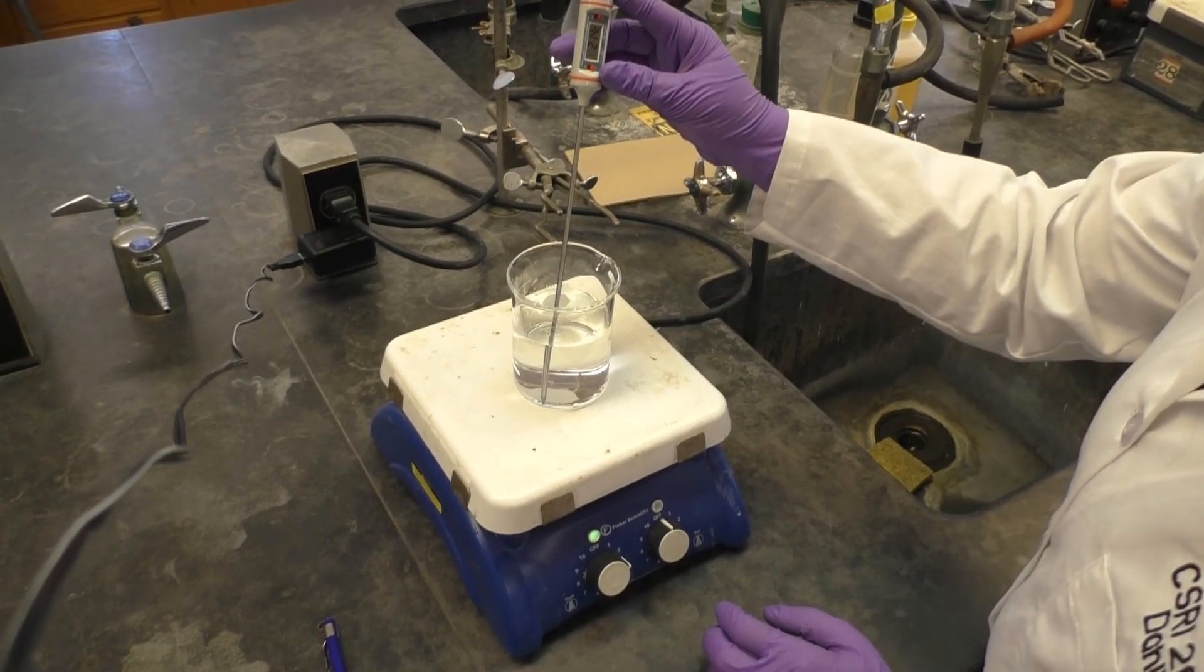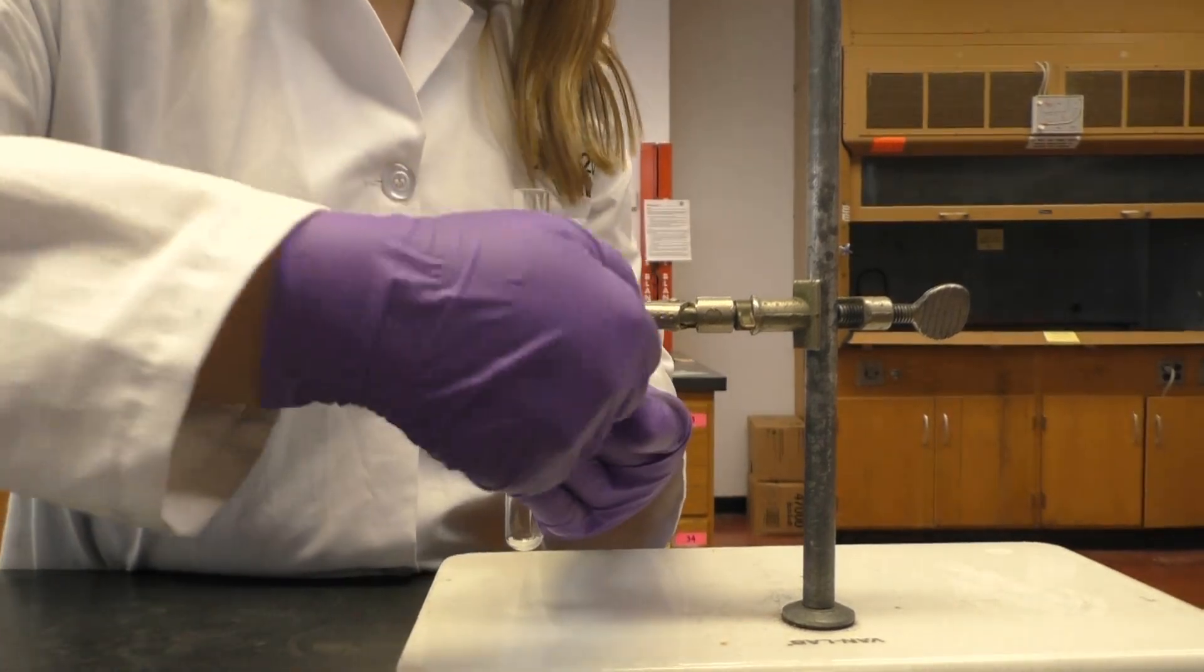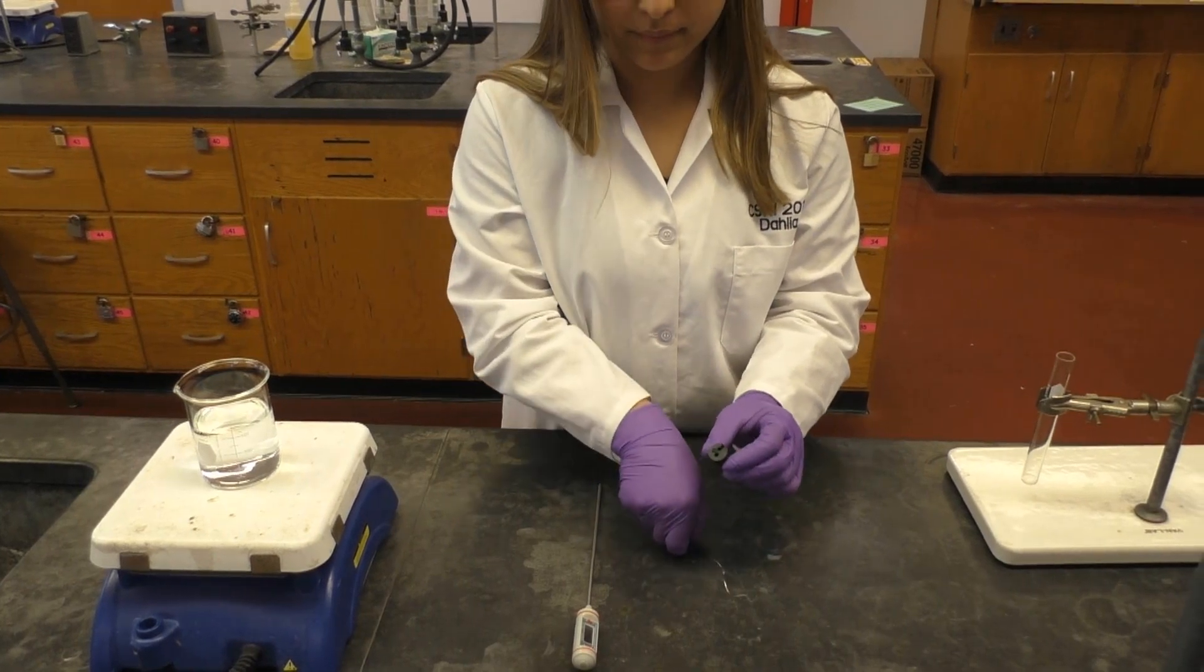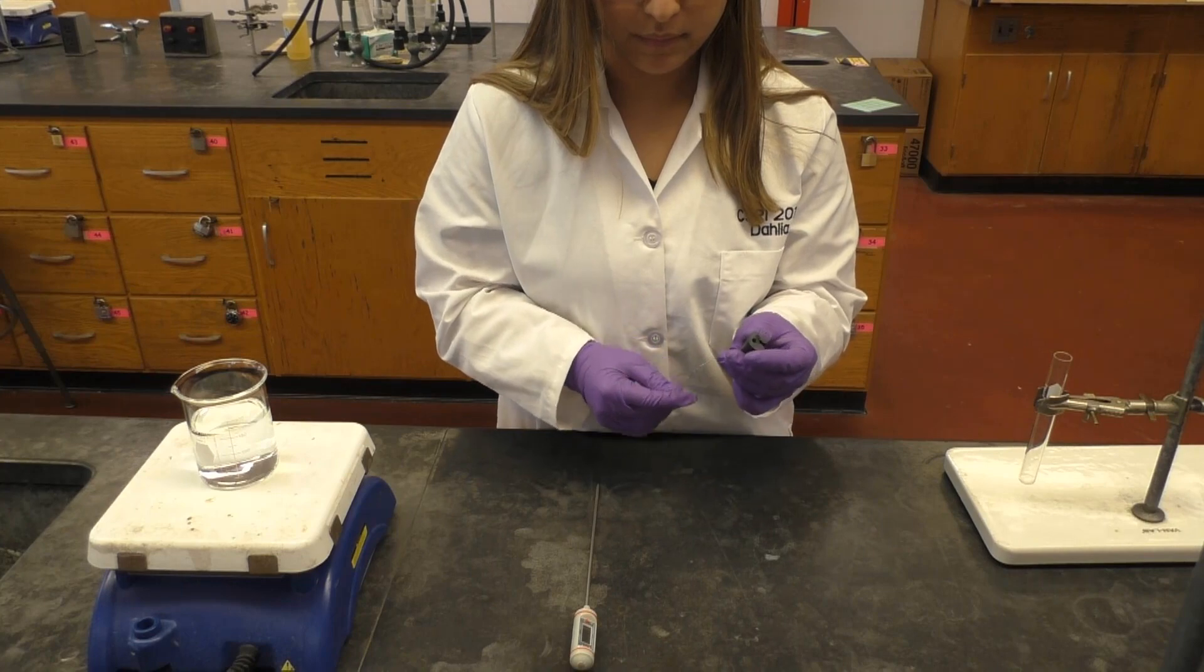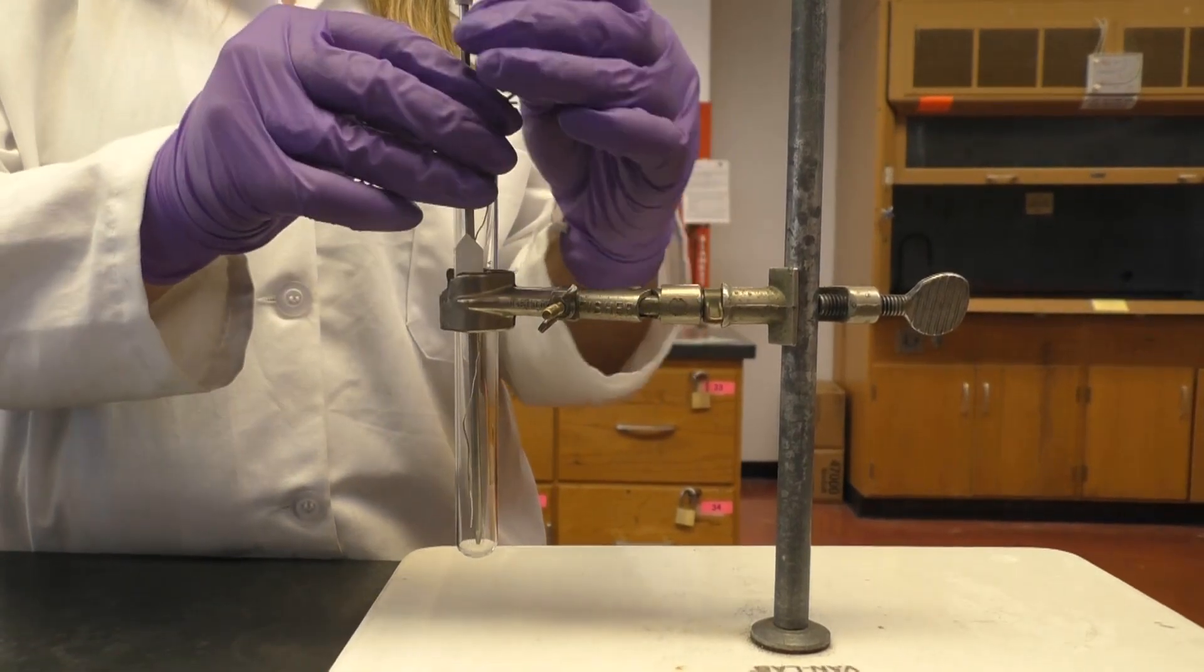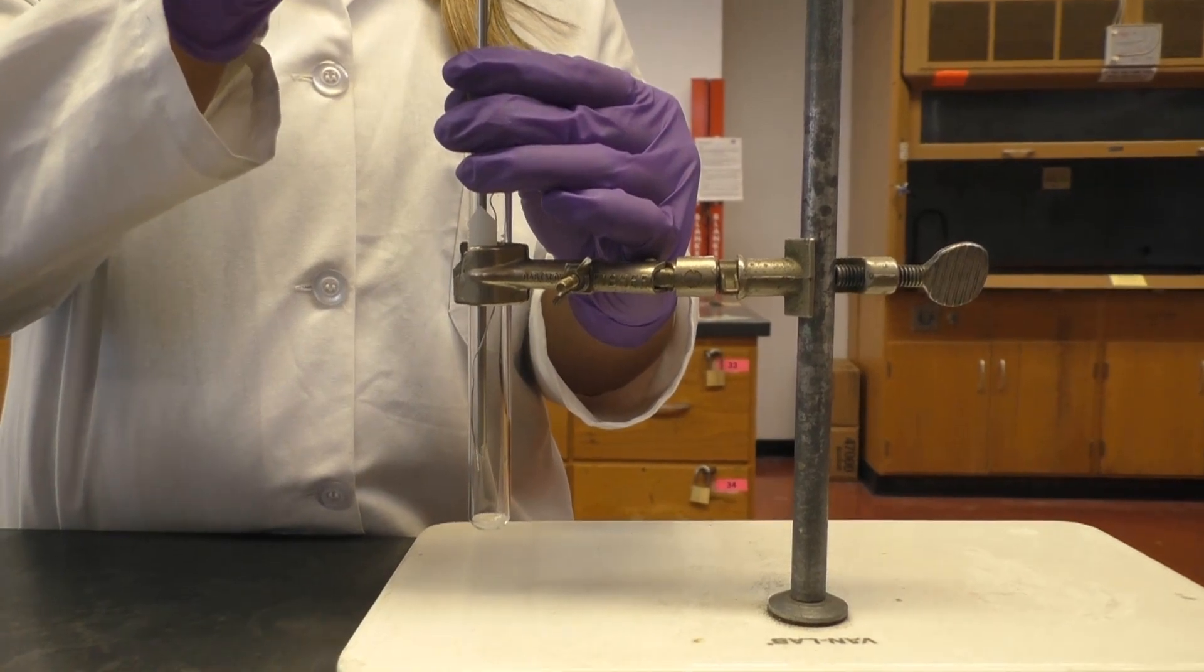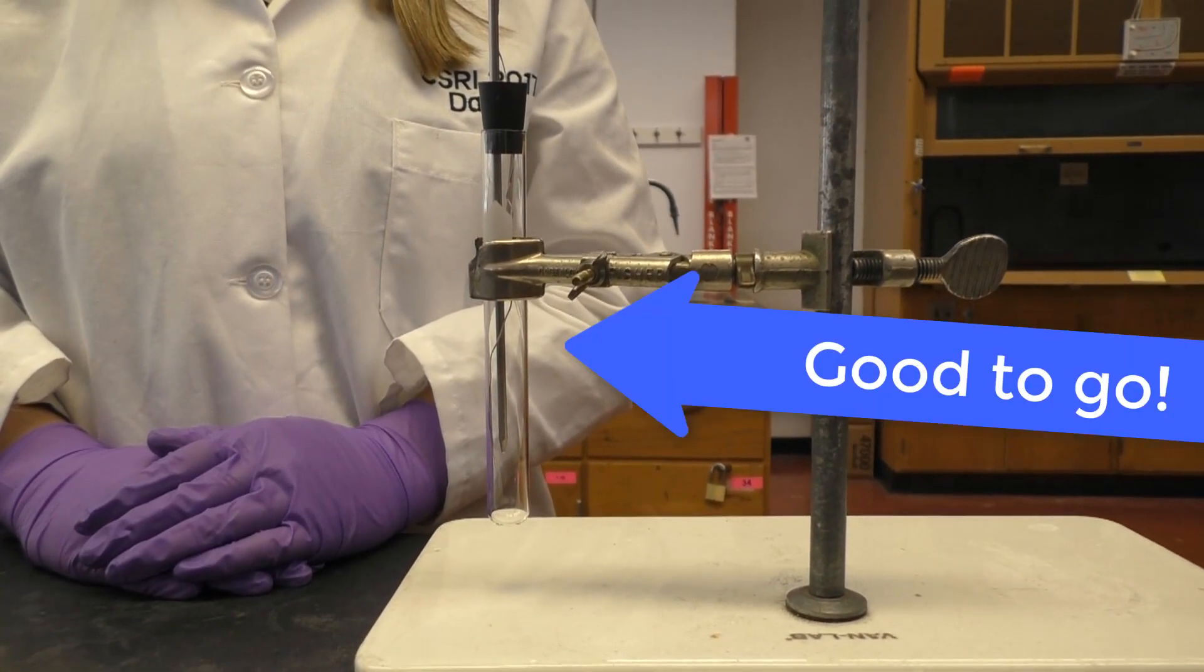Next, you'll need to set up your melting slash freezing point apparatus. First, get a clamp and attach your test tube to a burette stand or bench pole. Next, fit the wire stirrer through the smaller hole in your rubber stopper and then fit the thermometer around the remaining hole. After fitting your rubber stopper to the top of your test tube, make sure the thermometer and wire stirrer are not touching the bottom of the tube. Then your apparatus is good to go.